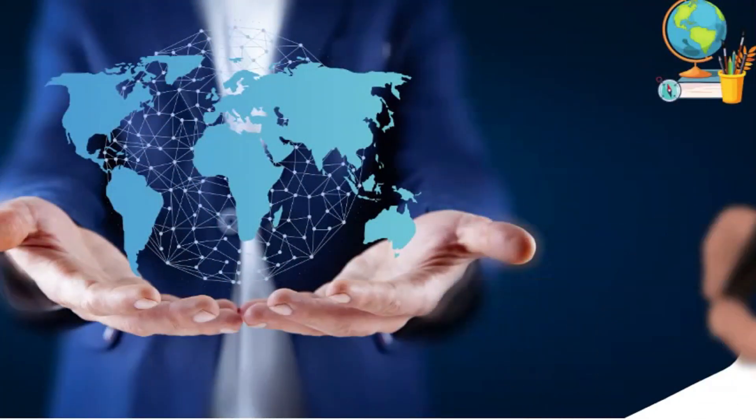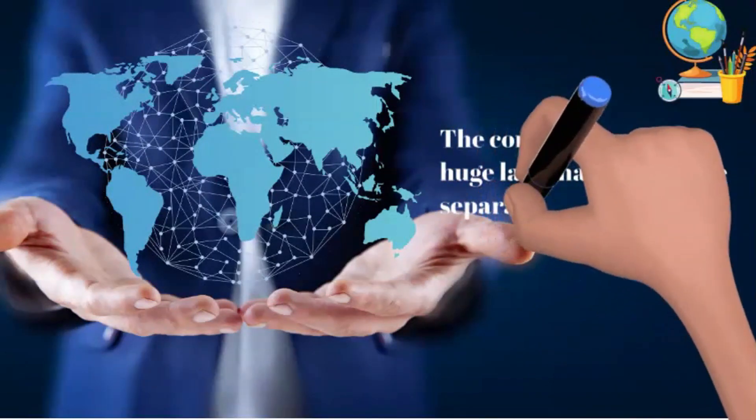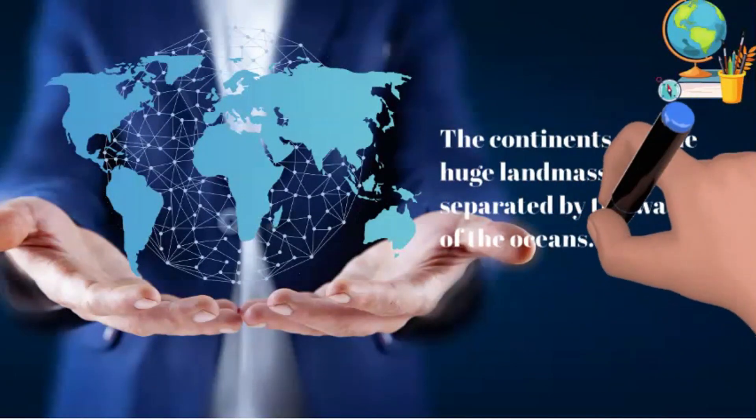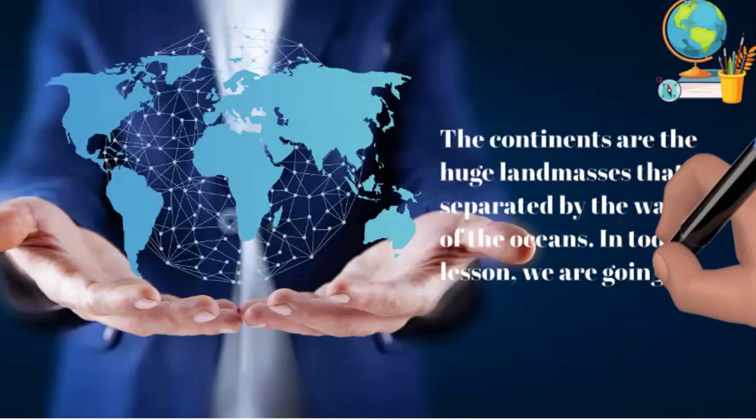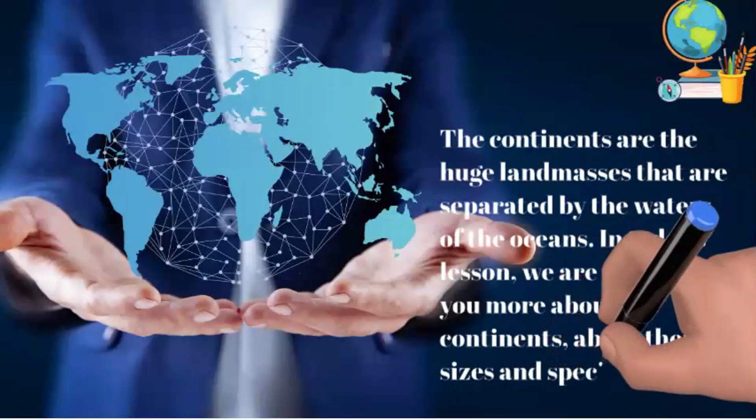There are seven continents and five oceans on our planet. The continents are the huge landmasses that are separated by the waters of the oceans. In today's lesson, we are going to tell you more about the continents, about their sizes and special features.